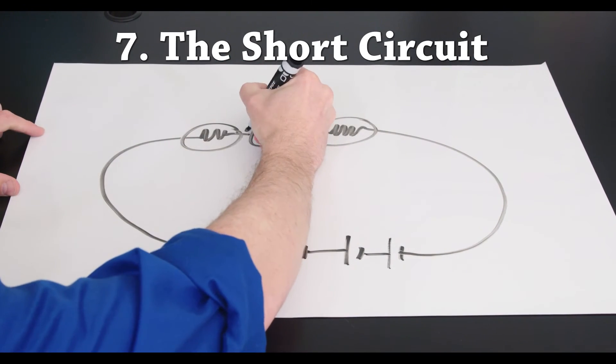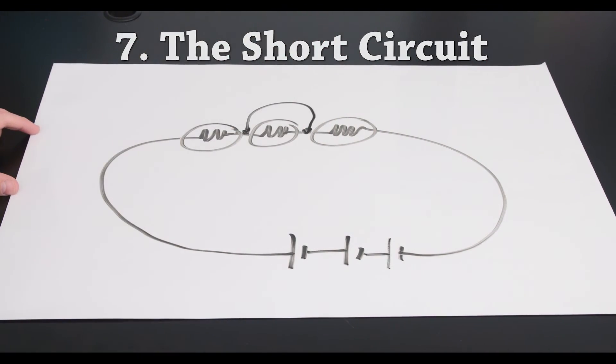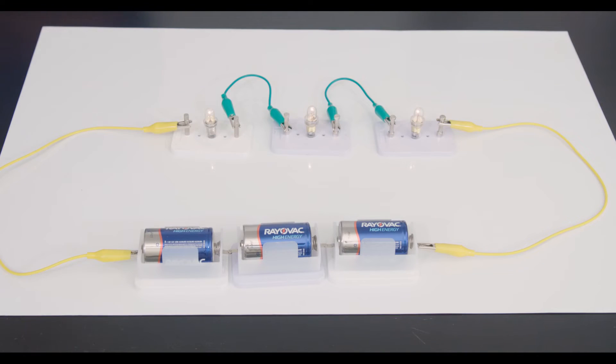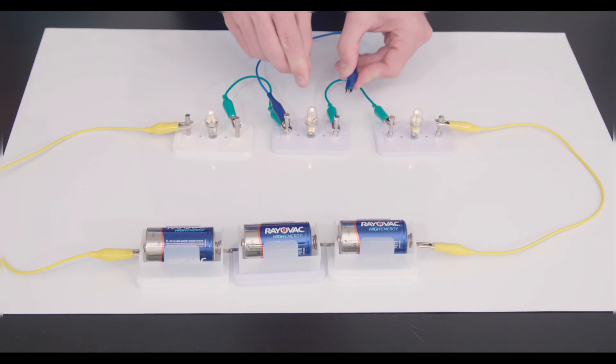Number seven: the short circuit. Remember this circuit, three bulbs in series? What do you think will happen if I put a wire across the middle bulb?